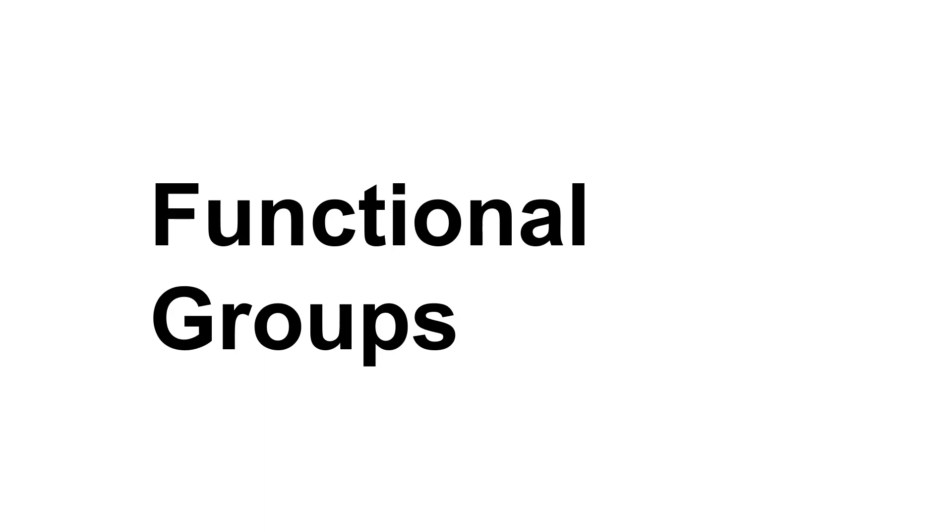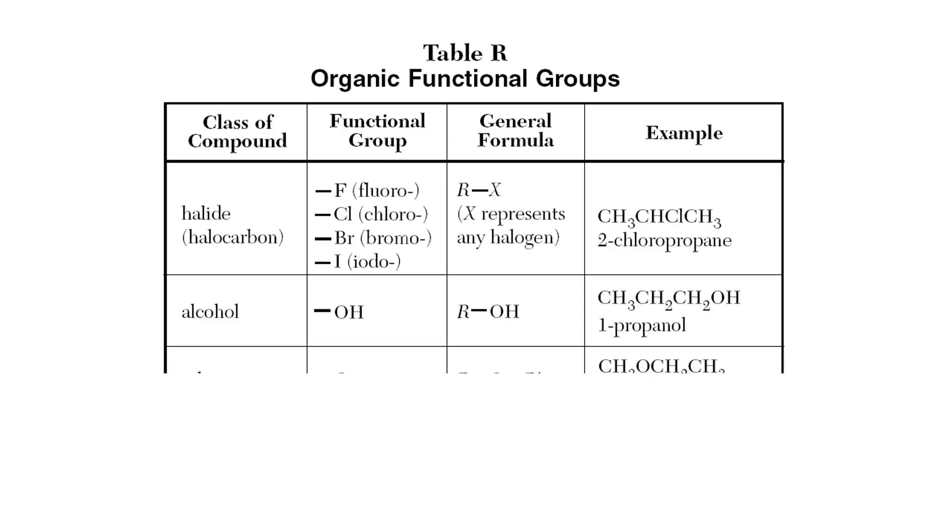Functional groups is what we're going to talk about today in organic chemistry. And they make carbon, or hydrocarbons, more exciting because we're going to add a couple different elements to this. Table R is where you find functional groups. Functional groups are when we take some of the hydrogen off of a hydrocarbon and we replace it with something else, either another element or a group of elements in a certain arrangement. Let's look at the first one.